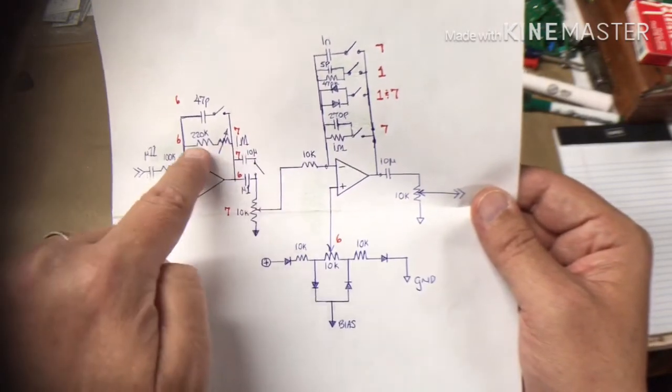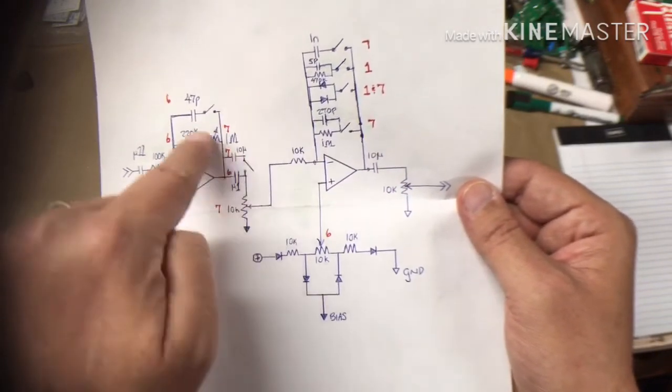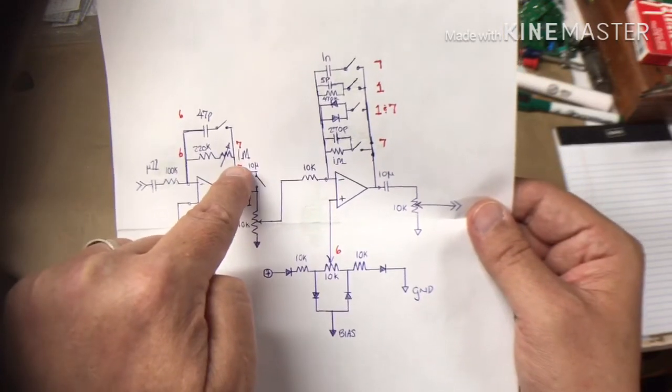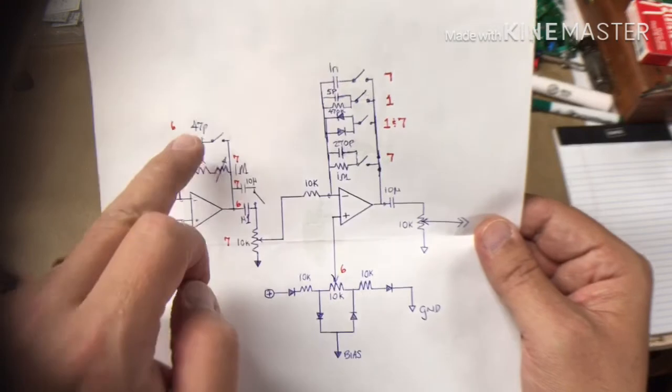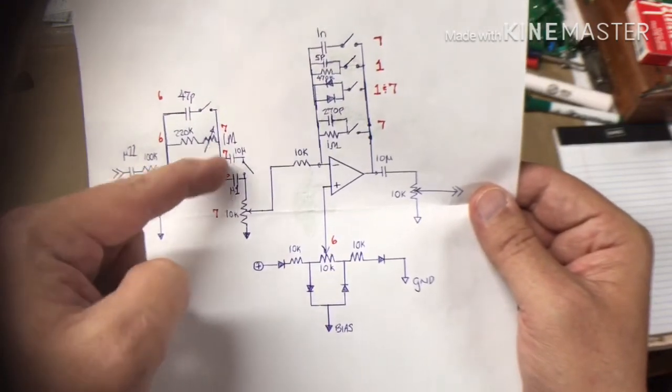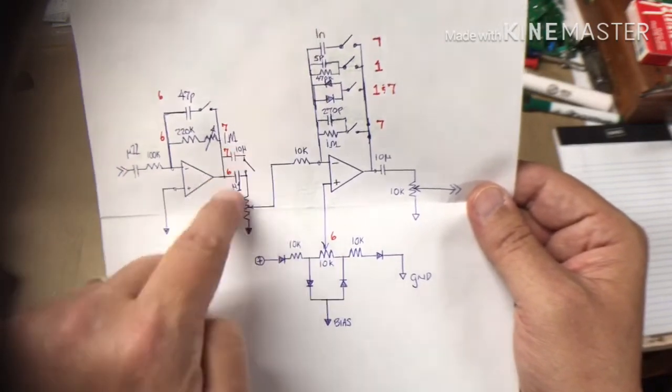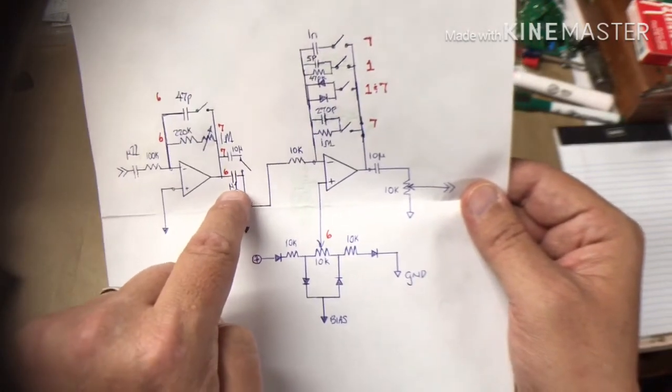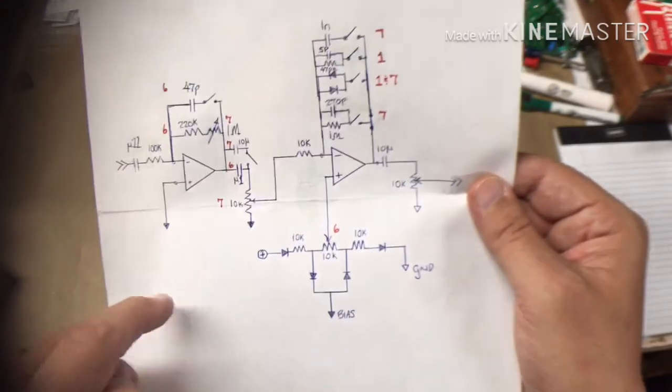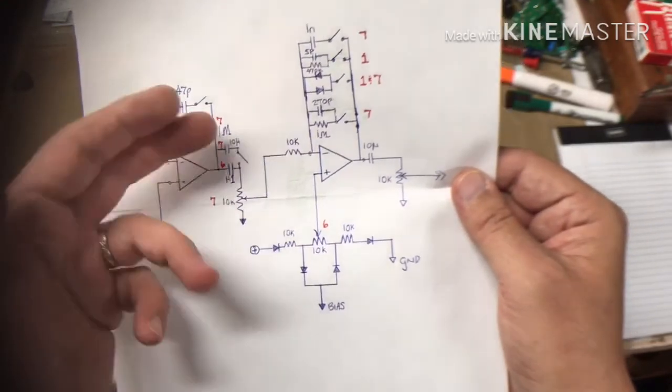Project six had this 47 picofarad capacitor there. There was a difference in the output capacitors in six and seven. One of them was a 0.1 microfarad, the other one was 10 microfarad for the base frequencies to get through.